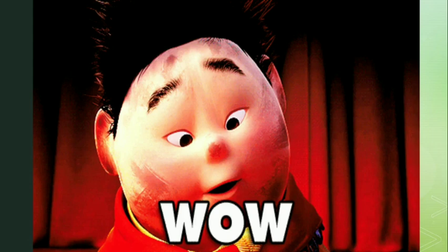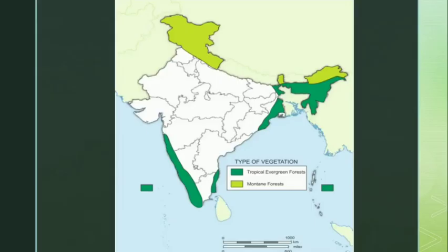Wow! Isn't it mesmerizing? In India, such rainforests are found in the western Ghats, the Andaman and Nicobar Islands, and the northeastern states, as you can see on the map.